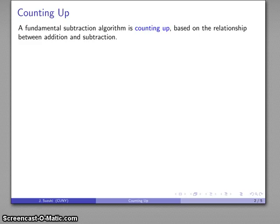Suppose we only know how to count at this point. Then one thing we can do is still do subtraction based on an approach called counting up. And this is based on the relationship between addition and subtraction. If we understand what subtraction means, then we can use our knowledge of counting to allow us to subtract.